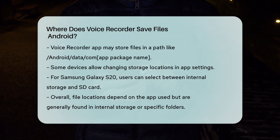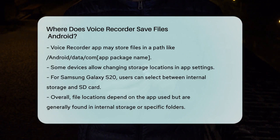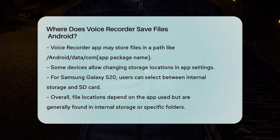If you want to change the storage location for your voice recordings, some devices allow you to do so. On a Samsung Galaxy S20 series, for example, you can open the voice recorder app, go to the settings, and select the storage location between internal storage and the SD card.